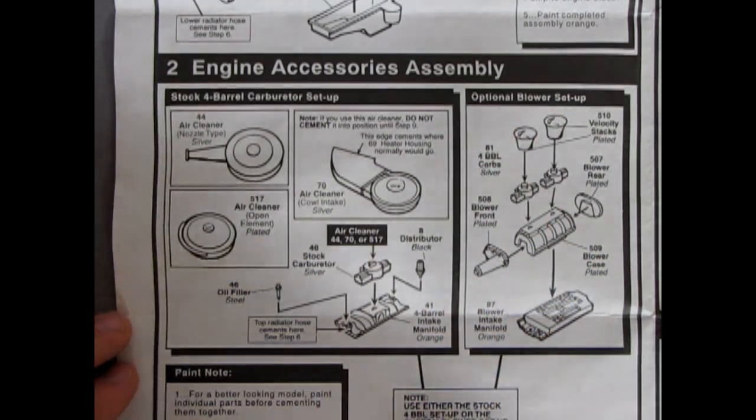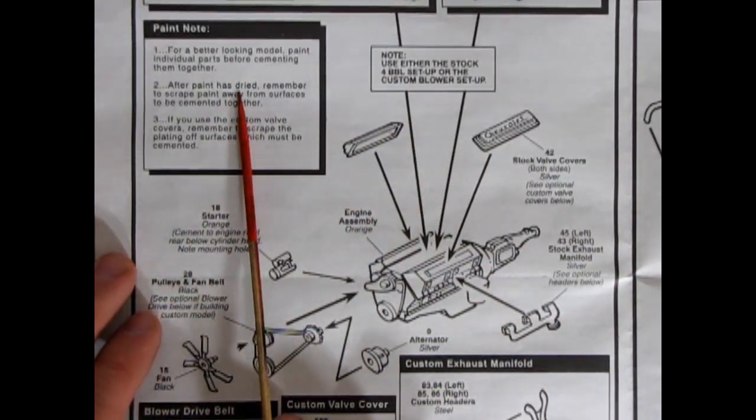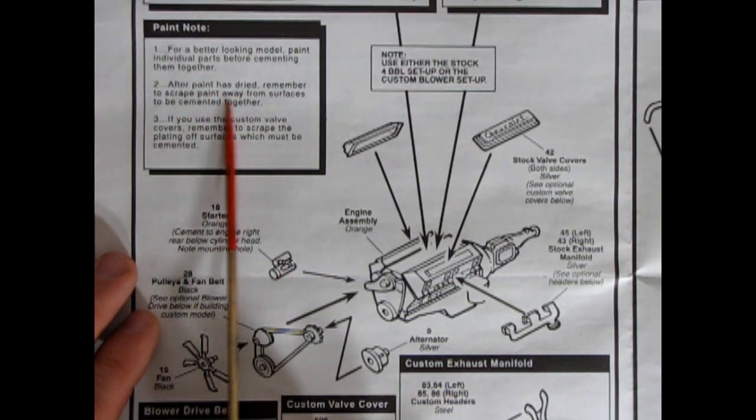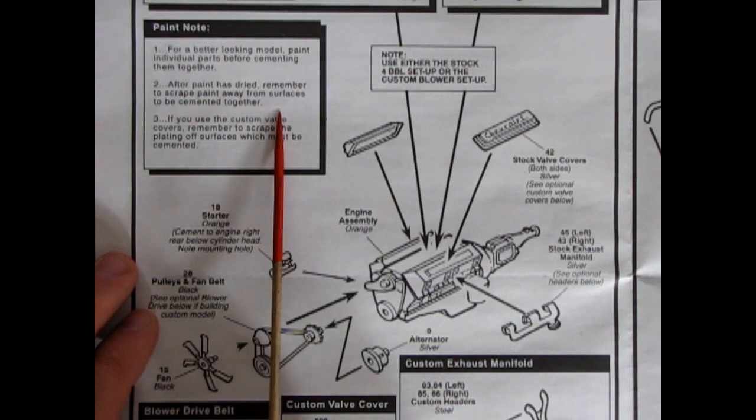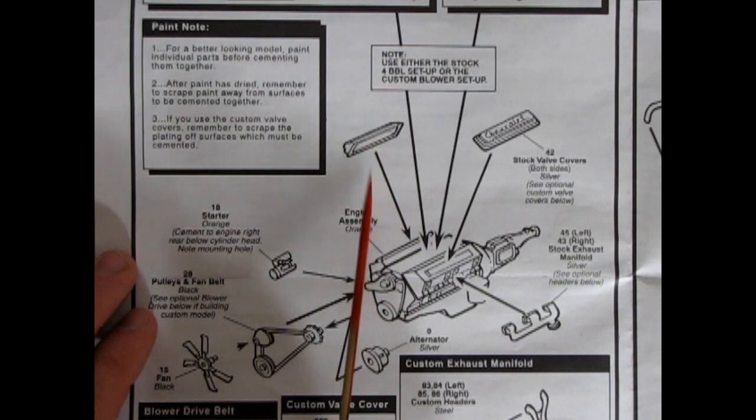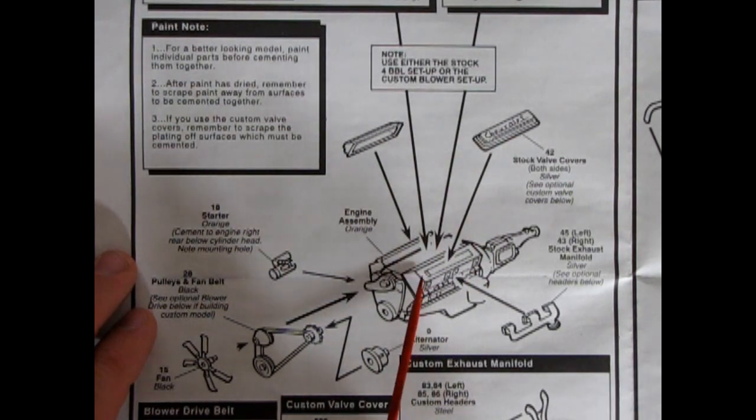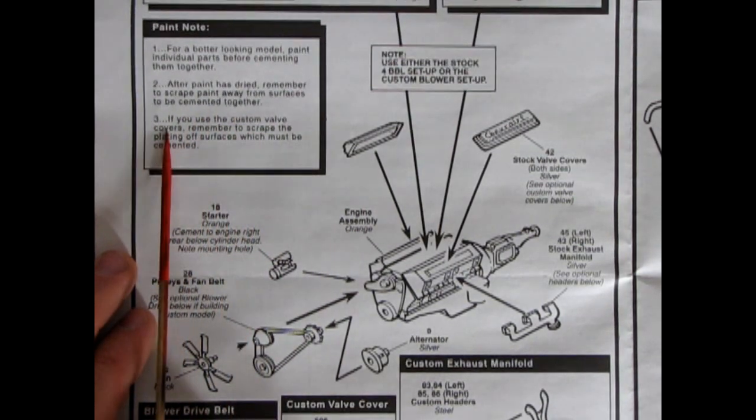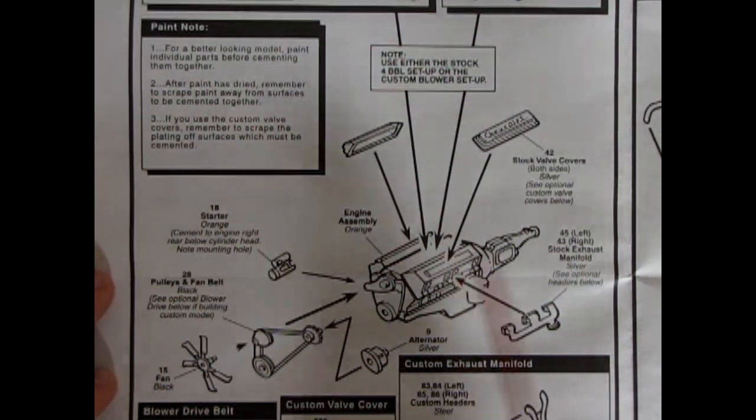And then we get into this big four barrel dual carbureted blowered super motor. It says optional blower setup. Okay and then down here we've got our engine for our 302 with painting notes. For a better looking model, paint individual parts before cementing them together. After paint is dried remember to scrape paint away from the surfaces to be cemented together. That's the big one. And a lot of guys will use like 10x7 and all these kind of super funky glues because they don't want to scrape the paint away. You don't need all that stuff. You can just use testers and but scrape the paint and go plastic to plastic.